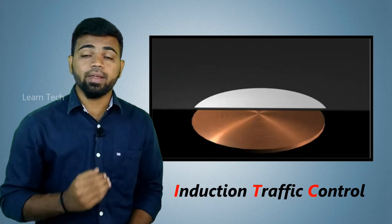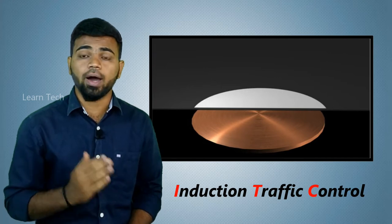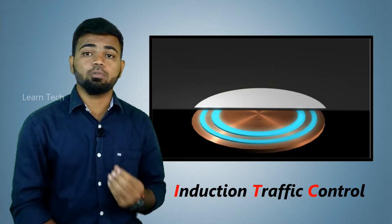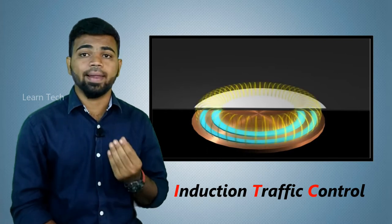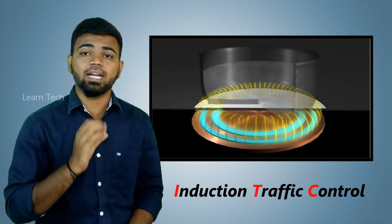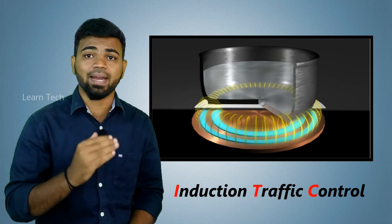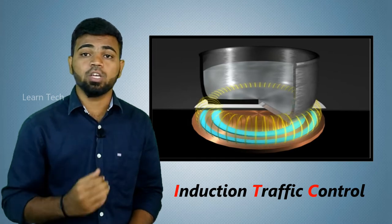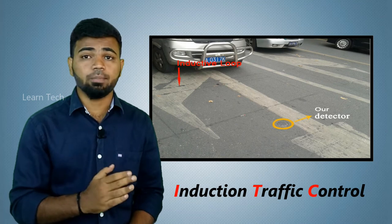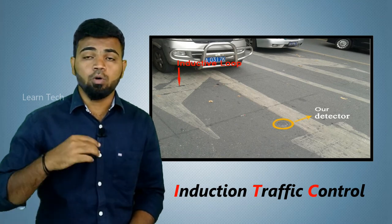The third type is induction-based traffic control. How does induction-based traffic control work? That is the principle of this traffic signal. If you use an induction-based signal, you use an electric coil. The electric coil creates a magnetic field. If a vehicle passes over the magnetic field, it can induce a change in that magnetic field.